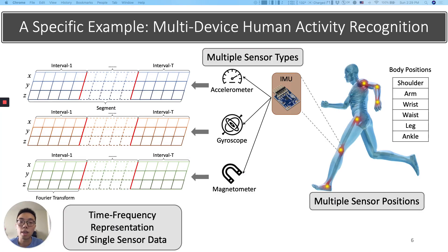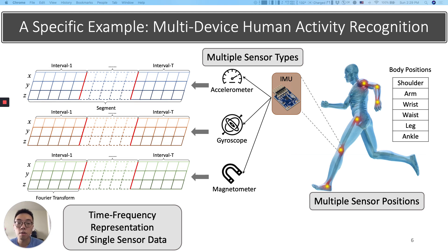Specifically, we target the multi-device human activity recognition application. Multiple inertial modules can be deployed simultaneously on several body positions, while each IMU module consists of an accelerometer, a gyroscope, and a magnetometer. For each sensor position pair, the data is in the format of a time-frequency spectrogram.